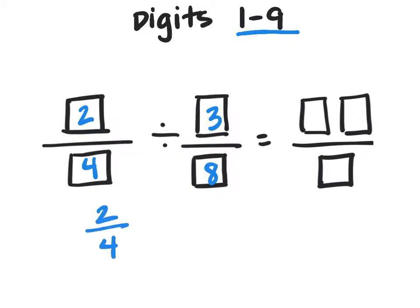So my problem becomes 2 fourths times 8 thirds, and now I've got 16 twelfths.